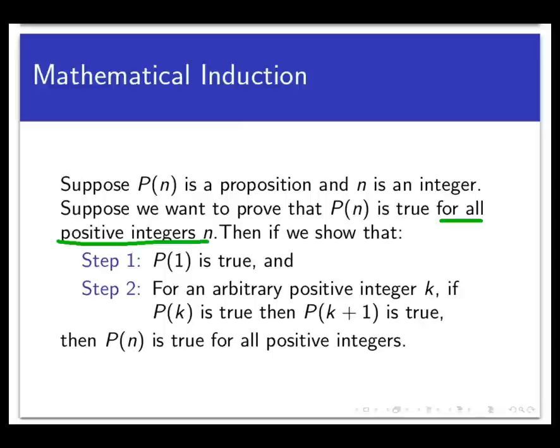We're trying to prove that p(n) is true for all natural numbers n. Following the example of the weary traveler trying to climb a staircase, we proceed in two stages. First we prove the base case that p(1) is true — the smallest possible case. Then we assume that for some natural number k, p(k) is true. That's the inductive hypothesis, and from it we prove that p(k+1) is true. If we do all this, p(n) is true for all natural numbers.